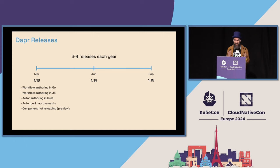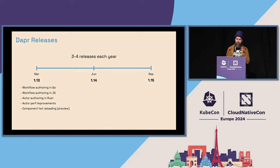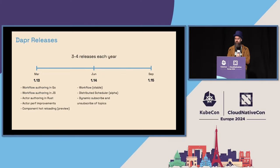Workflow authoring was already available for .NET, Python, and Java, but now even more languages benefit. You can also use the actor model in Rust, there are lots of performance improvements for the actor model in general, and there's a preview of component hot reloading — meaning you no longer need to restart your application when you switch components.